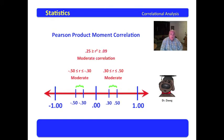We also have a moderate correlation. Moderate correlation would fall between negative 0.5 and negative 0.3, or 0.3 and 0.5. And of course, another way of saying that is that the r square is less than 0.25 and greater than 0.09. We just square these values.